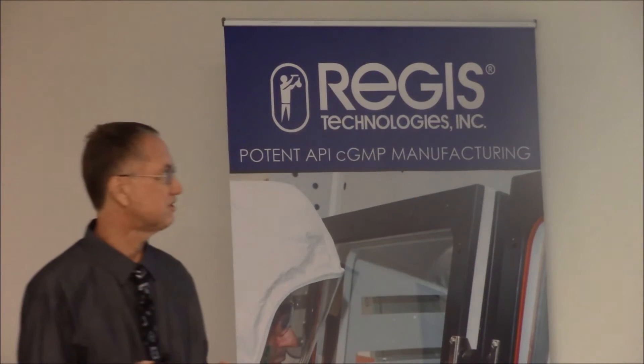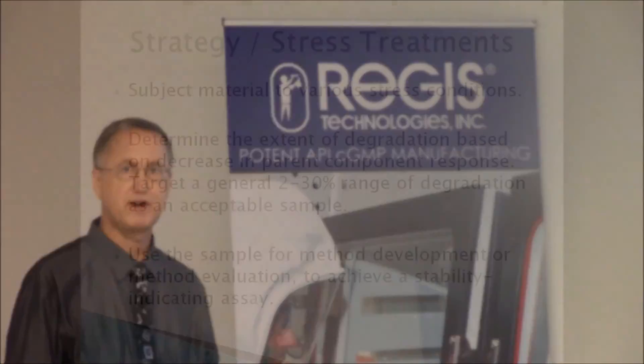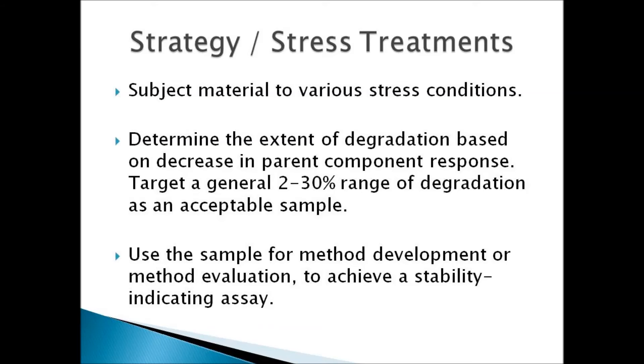On the next topic — strategy and stress treatments — generally what one does in these studies is to subject the material to various stress conditions and then determine the extent of degradation based on a decrease in the parent component response, which you will see by a chromatographic method. You want to target a general two to thirty percent range of degradation as an acceptable sample for use in method development, and using that sample is what will get you toward a stability indicating assay.